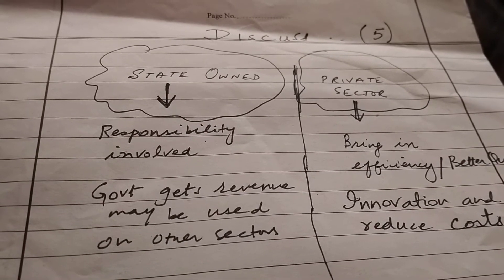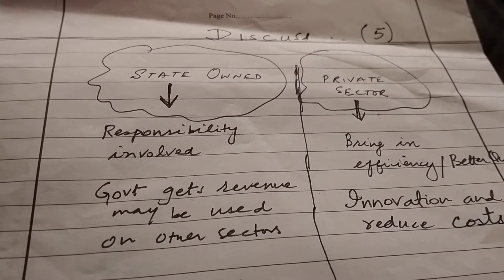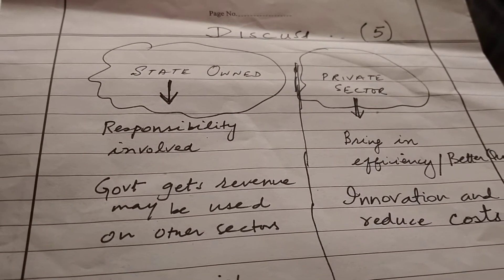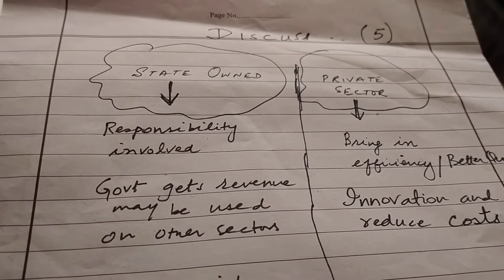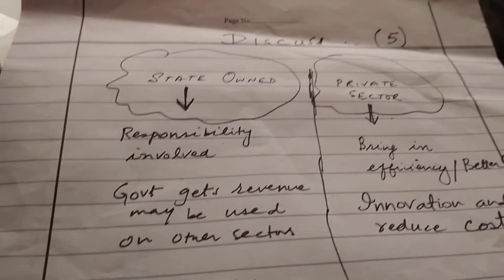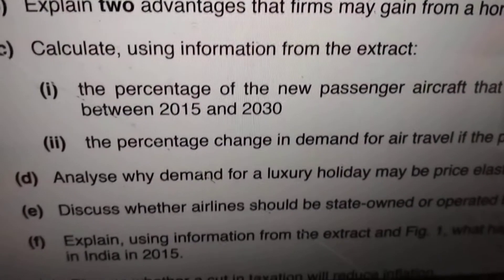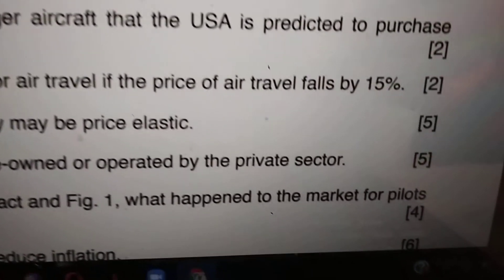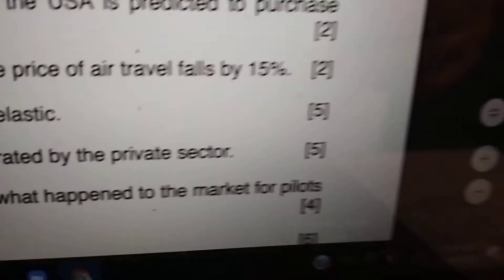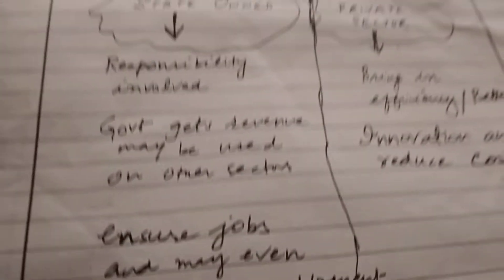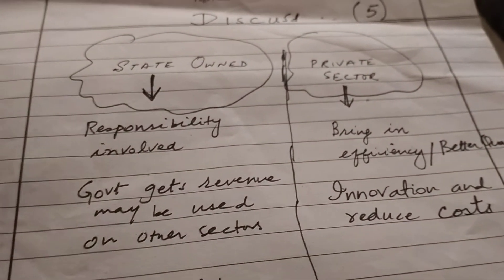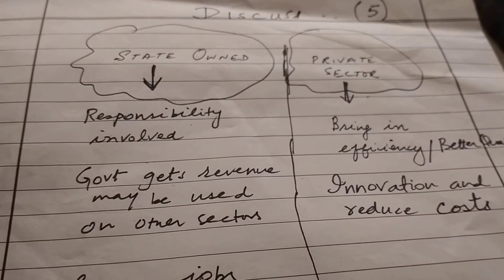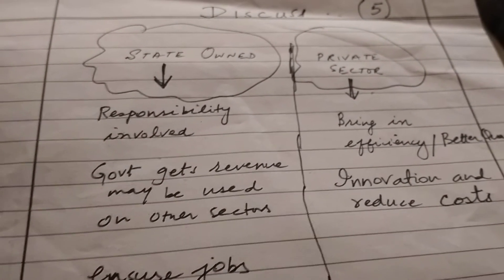In a discuss question, the important thing is that you have to write both sides — points in favor and points against. For a five-mark discuss question, you can write three points in favor and two points against. So for this question, 'Discuss whether airlines should be state-owned or operated by the private sector,' I will write points for and against.